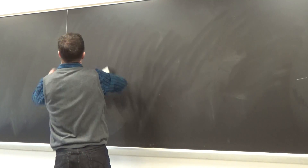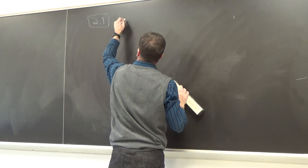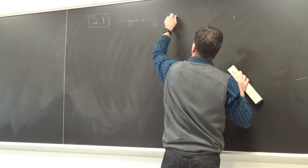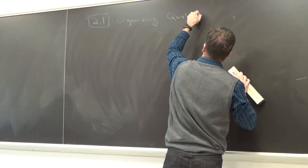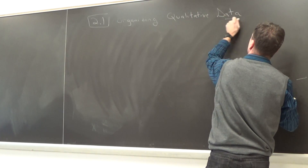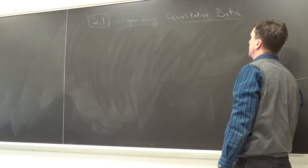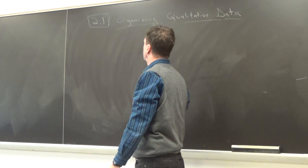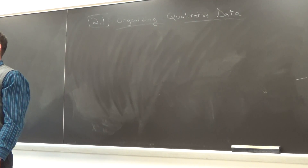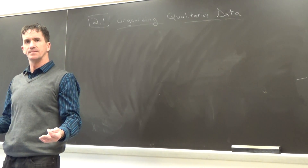And now we're moving to Section 2.1 — organizing qualitative data. Section 2.2 is going to be organizing quantitative data. So do you want a major difference between qualitative data and quantitative data? Is it the same as qualitative and quantitative variable?